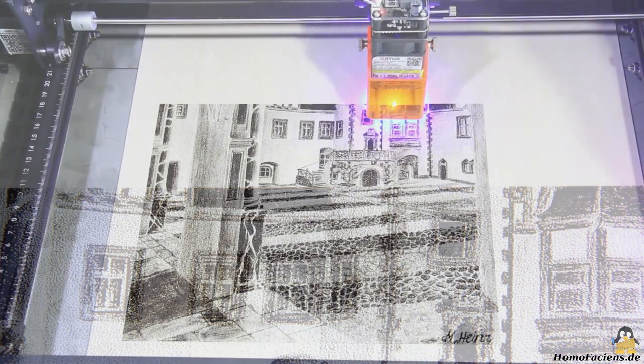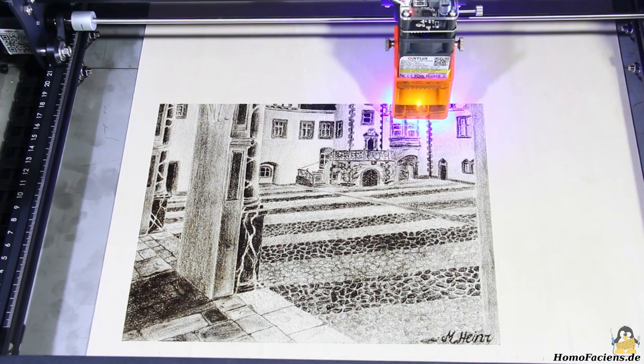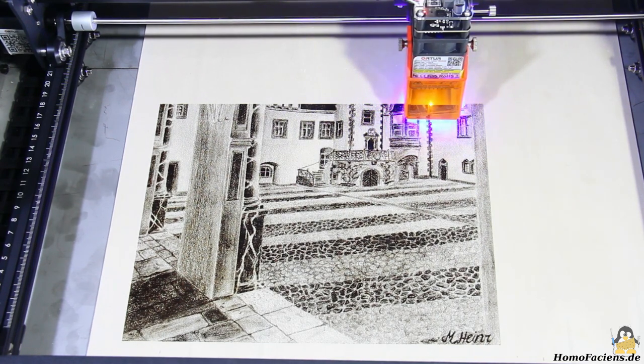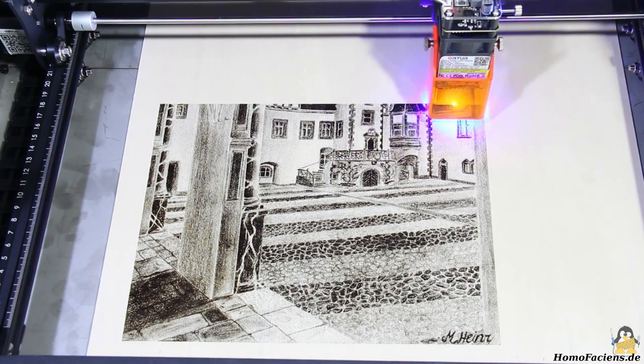The parameters to be set in the software are the laser power and the burn time. Too much of both result in too wide, smeared dots and so in a blurred graphic. Not enough of both and the material is not carbonized and so nothing can be seen.